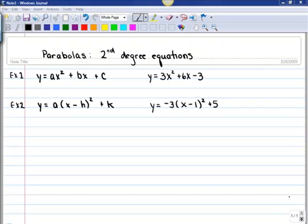In this lesson, we'll be looking at parabolas, which are second-degree equations. I've got two examples showing two different ways that parabolas can be written. Example one is the general form, ax squared plus bx plus c. As an example, I have y equals 3x squared plus 6x minus 3.